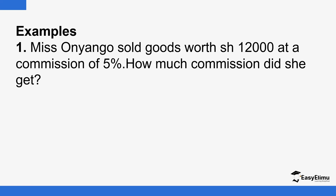Let's look at a few examples. We have somebody here — Miss Nyango — who sold goods worth 12,000 shillings at a commission of 5%. How much commission did she get? The agreed rate of payment here is 5%. It could also be a shop attendant. You agree: if you sell goods worth a certain amount, I'll give you 5%. This is done to motivate the shop attendant or the agent to be more aggressive and determined towards ensuring that a sale is made.